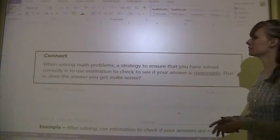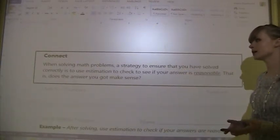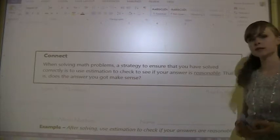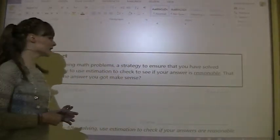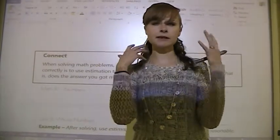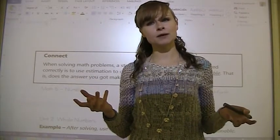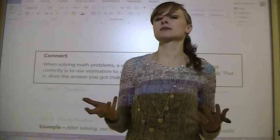At the very bottom of the page it says: when solving math problems, a strategy to ensure that you have solved correctly is to use estimation to check to see if your answer is reasonable. Does the answer that you got make sense? It's a way of just doing sort of mental math. I got this answer but I'm not quite sure if that's right. I'll just estimate. Oh yeah, it's close, so it must be at least close to right.